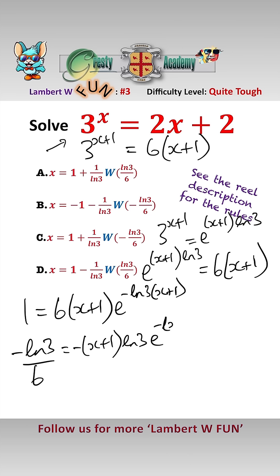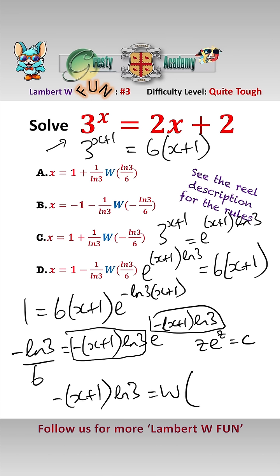This is now in Lambert W form, z e to the z equals c. So we can simply read off that minus x plus 1 log 3 equals w of minus log 3 over 6.